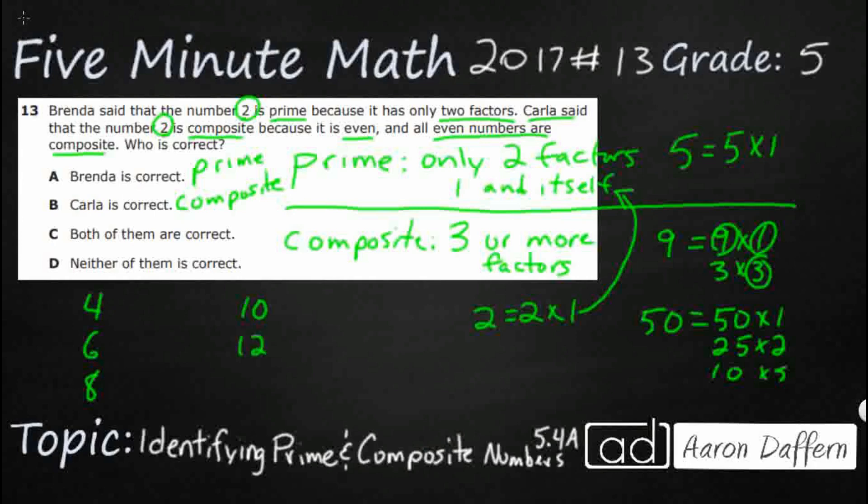Well, 4, I can do 1 times 4, I can do 2 times 2. For 6, I can do 1 times 6, I can do 2 times 3. Notice how 2 keeps showing up in my even numbers.